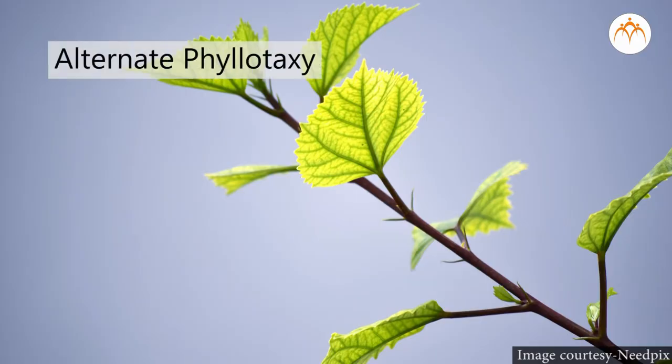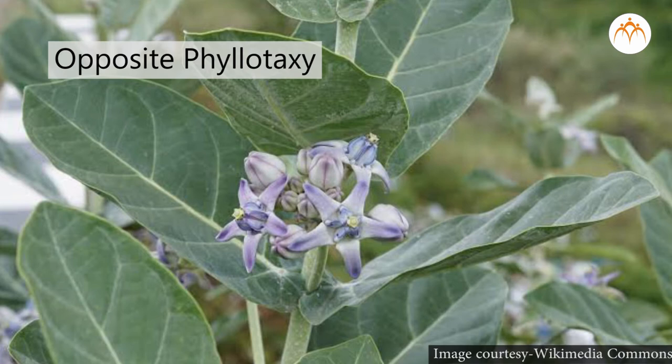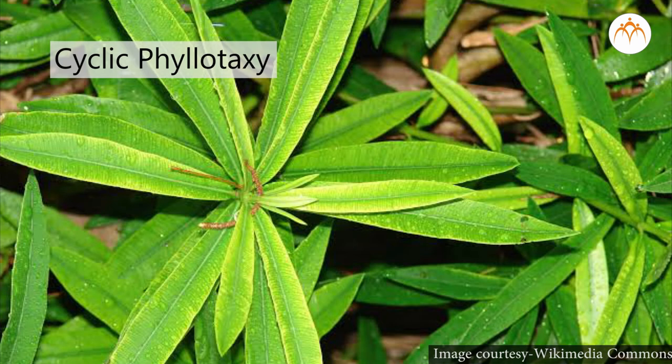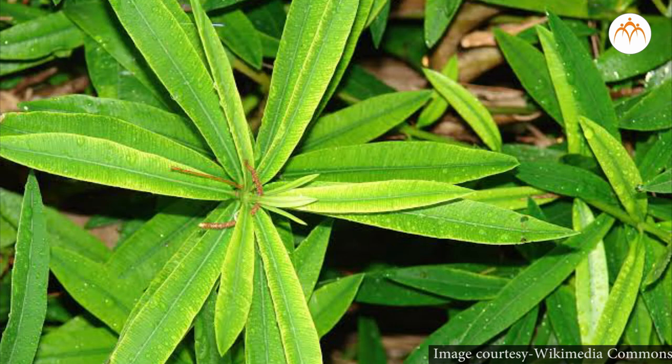The arrangement of leaves on the stem is different in different plants — this is called phyllotaxy. Mango and hibiscus show alternate phyllotaxy. There is opposite phyllotaxy in jasmine and calotropis. When there are more than two leaves at each node, it is called whorled phyllotaxy.